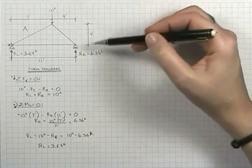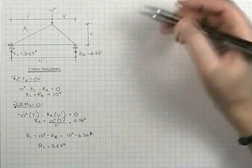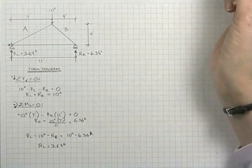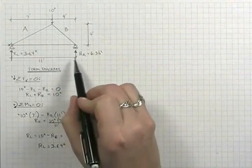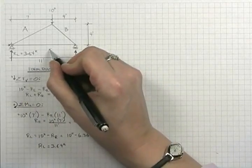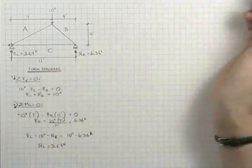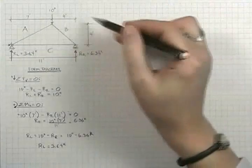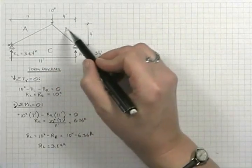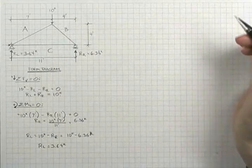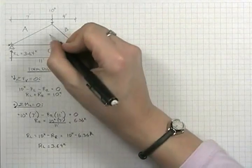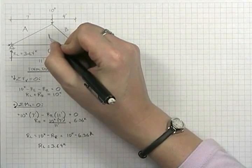And then between the ten kip load and the right-hand reaction, we'll label that B. And then lastly we have between the right-hand reaction and the left-hand reaction, we call that space C. We can label this in any order we choose. It really doesn't matter how we do it. We only have one interior panel. We label that point one.